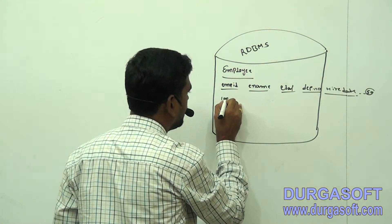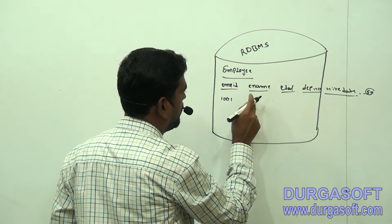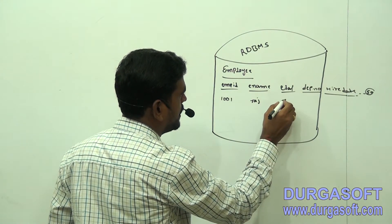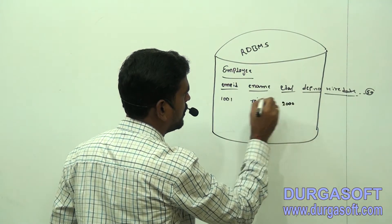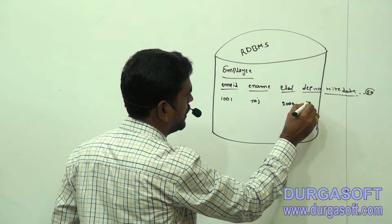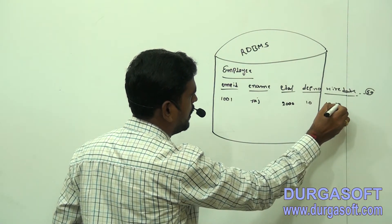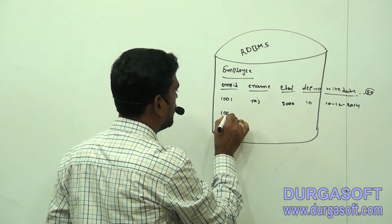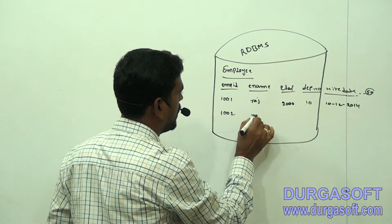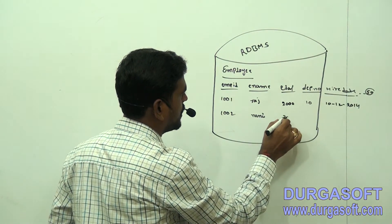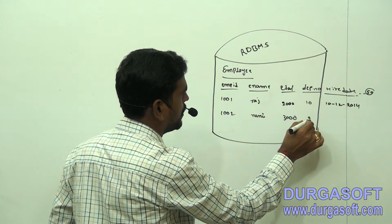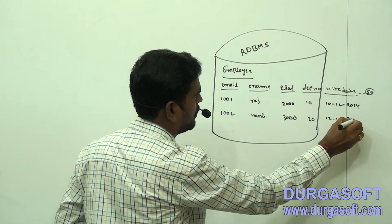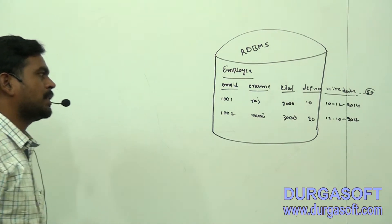Now my requirement is I want to get the employee name. Employee ID 1001, employee name is Raj, ESAL is 2000, department number is 10, date of joining is 10/12/2014. Employee ID 1002, employee name is Nani, ESAL is 3000, department number is 20, joining date is 12/10/2012. Some employees are there in the organization.